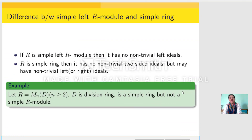Next we see the difference between a simple left R-module and a simple ring. A ring is said to be simple if it is nonzero and has no non-trivial two-sided ideals. But a ring is said to be a simple R-module if it has no non-trivial left ideals. So if a ring is simple, it need not be a simple R-module. For example, let D be a division ring and R be the set of n×n matrices over D. We know R has no non-trivial two-sided ideals, so R is a simple ring, but R has non-trivial left ideals, so it is not a simple R-module.